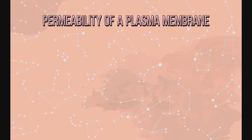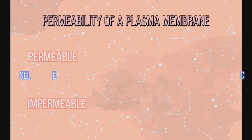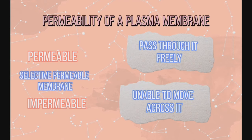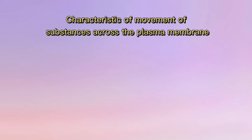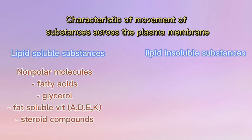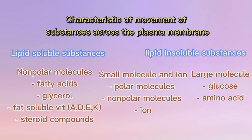There are two types of substances that can move across the plasma membrane: lipid-soluble substances — non-polar molecules such as fatty acids, glycerol, fat-soluble vitamins (A, D, E, K), and steroid compounds; and lipid-insoluble substances, which include small molecules and ions such as water, oxygen, carbon dioxide, and ions like potassium, sodium, and magnesium, as well as large molecules such as glucose and amino acids.